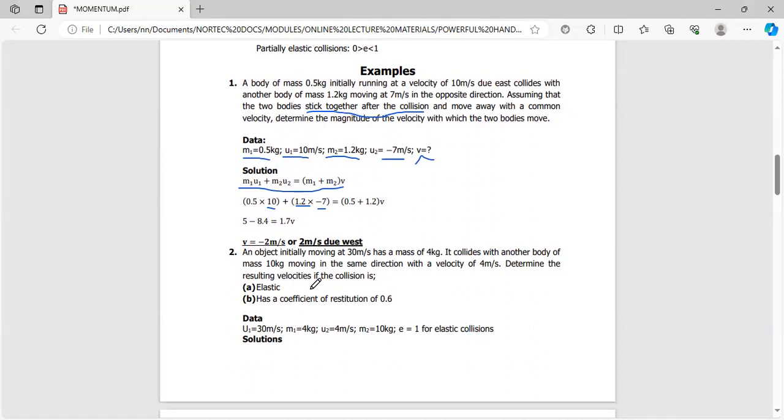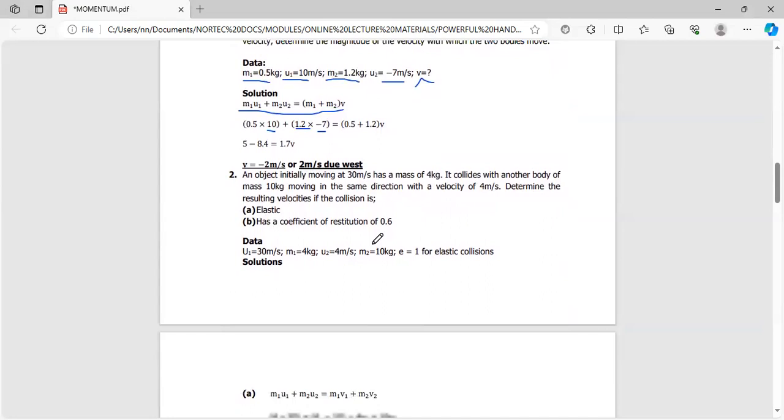Negative 2 m/s—interpreting it means this direction we assume to be negative, which was western. That's where the two bodies will move after the collision. They will move due west.